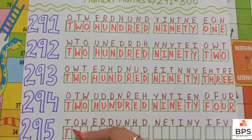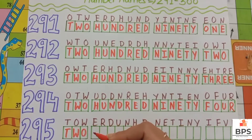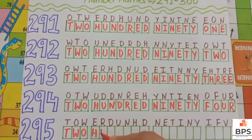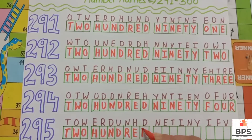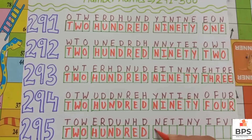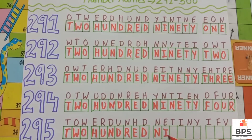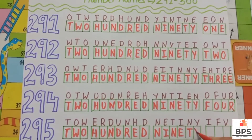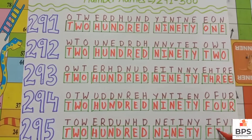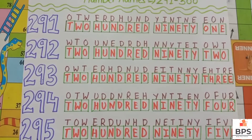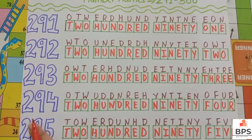Two hundred ninety five. T-W-O, two. H-U-N-D-R-E-D, hundred. N-I-N-E-T-Y, ninety. F-I-V-E, five. Two hundred ninety five.